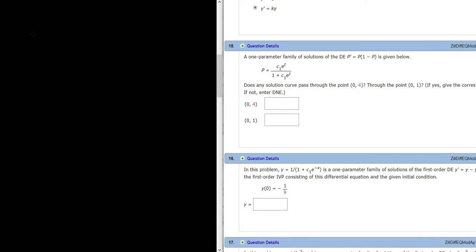So, the solution to the DE is P equals C1*e^T over (1 plus C1*e^T). So let's do the first part, (0,4). The solution will pass through this point if when you plug these numbers into this equation, the equation is true. In other words, we can find C1. So this is your T and this is your P.